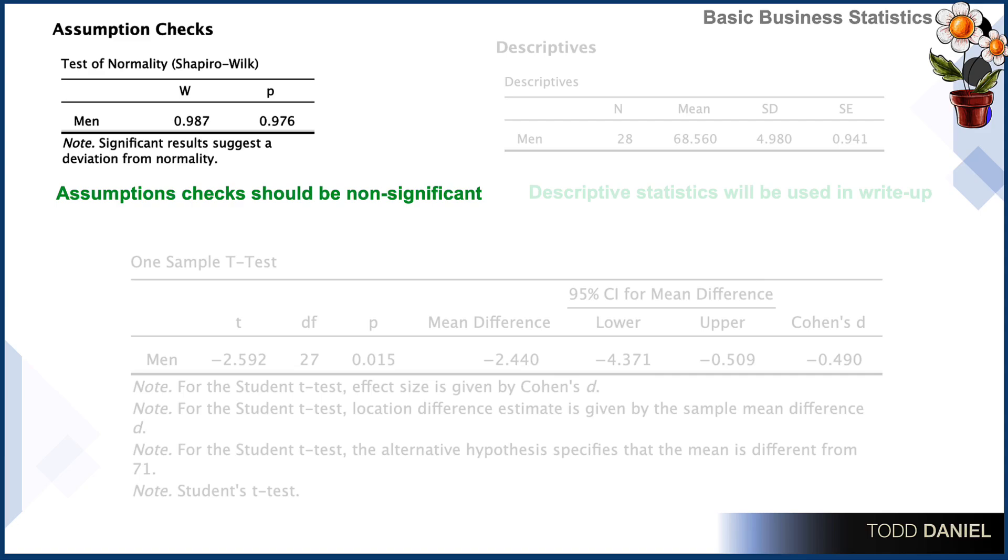We want to check our assumptions. We can check the assumption of normality using the Shapiro-Wilk test. And anytime we are checking for assumptions, we want the test to be non-significant, meaning that our data do not differ from the assumptions of the test. In this case, the assumptions test is non-significant.